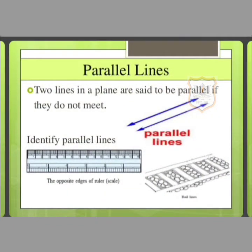Here are a few examples of how to identify a parallel line. For example, the opposite edges of a ruler or scale, or railway lines are examples of parallel lines. In simple words, lines which do not meet are called parallel lines.